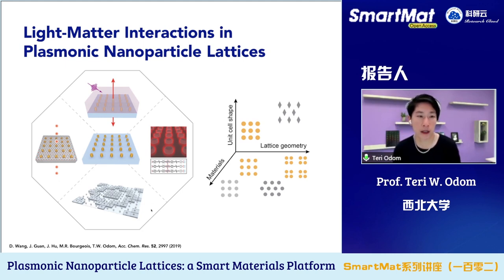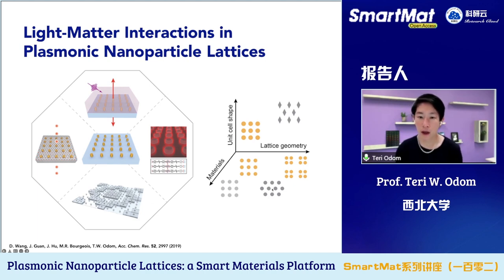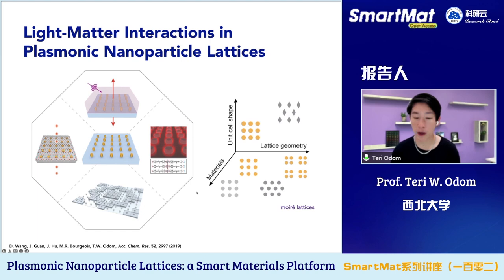The platform we'll be discussing today is plasmonic nanoparticle lattices. On the left-hand side, you can see a portion of the phase space that these lattices can occupy. For example, we can change the lattice geometry from a super lattice to a square lattice, a hexagonal lattice, or even a Moiré lattice. We can change the unit cell shape — cylindrical particles in two dimensions, or rhombohedral particles. We can change the type of materials, with a range of silver, gold, copper, platinum, palladium, and even hybrid materials that we'll discuss today.